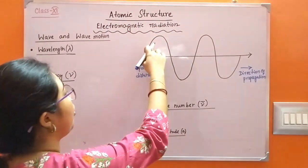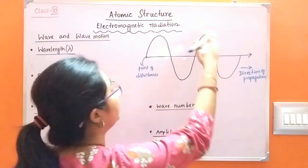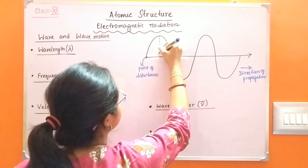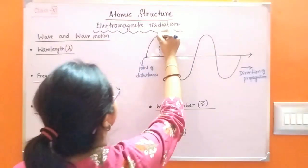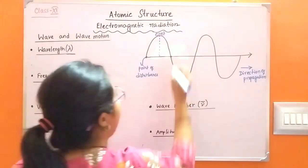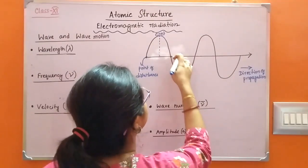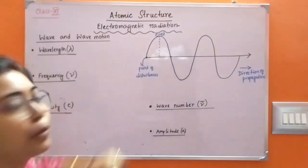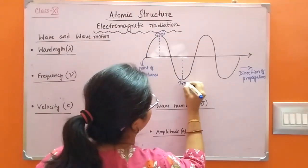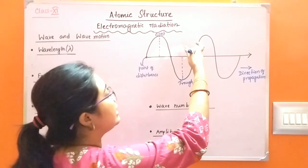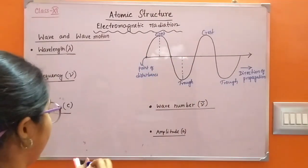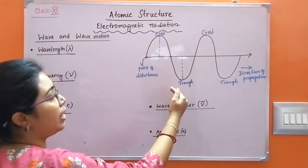From the point of disturbance, the wave originates and propagates in the form of up and down movement. As the wave moves, the amplitude increases and attains a maximum value. The point of maximum amplitude is called a crest. On further movement, the amplitude decreases to zero at the line of propagation, then continues to decrease on the negative side, attaining a minimum value. The point of minimum amplitude is called a trough. Then again, amplitude increases to a crest, and then again a trough. In wave motion, a continuous sequence of alternate crests and troughs is obtained.